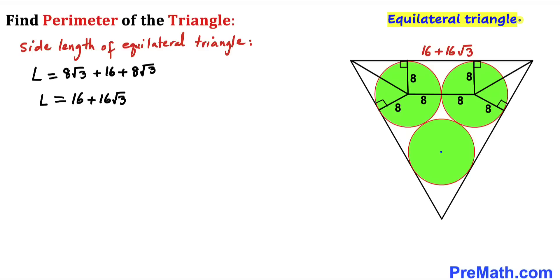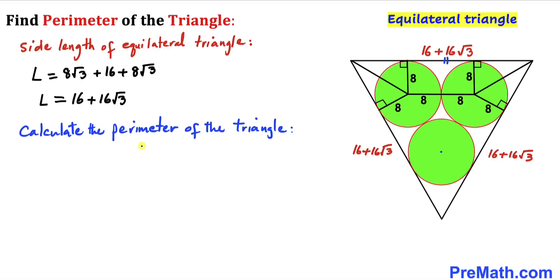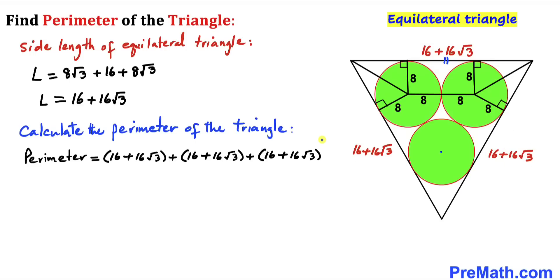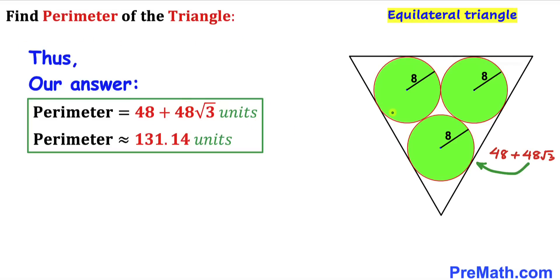Since we are dealing with an equilateral triangle, all three sides have the same length. Calculating the perimeter by adding all three sides together, the perimeter turns out to be 48 plus 48 times square root of 3. Thus the perimeter of this triangle is 48 plus 48 times square root of 3 units, or approximately 131.14 units in decimal form.